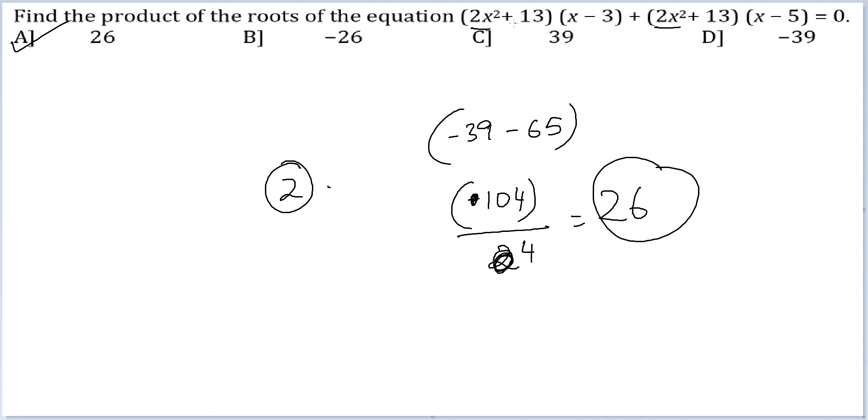I could have also done this simply: take (2x² + 13) common, and then in the other bracket you will be left with (x - 3) + (x - 5), or 2x - 8.